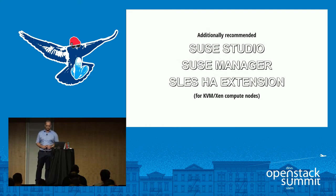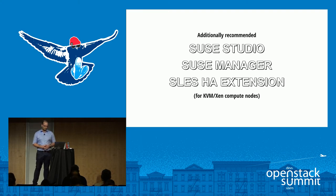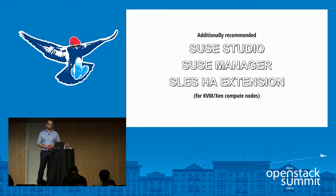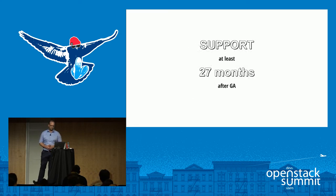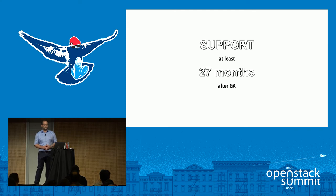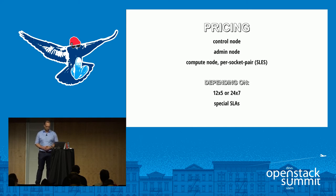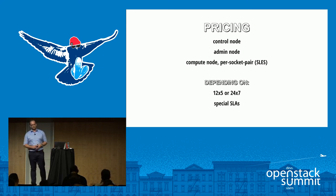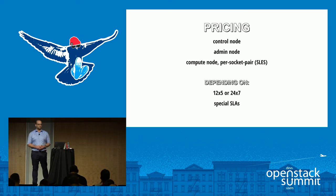Recommended additional tools include SUSE Studio to build appliances, and SUSE Manager. For KVM and Xen instances that are not cloud-ready, there's a SLES High Availability extension to handle legacy applications. Support is at least 27 months — two years and three months — after the product is released. Pricing includes different prices for control nodes, admin nodes, and compute nodes based on socket pairs. If you have more than two sockets, you pay an additional subscription, and it also depends on the type of support availability.